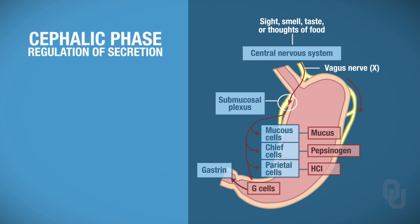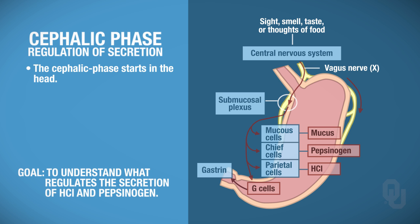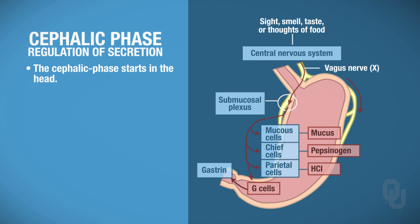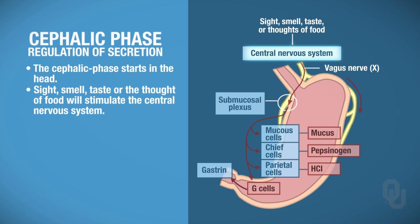We're going to start with the cephalic phase. Remember, the stimulus for the cephalic phase originates in the head. What regulates secretion of hydrochloric acid and pepsinogen? Starting with the stimuli: the sight, the smell, the taste, and the thoughts of food. These stimuli are going to stimulate the central nervous system.